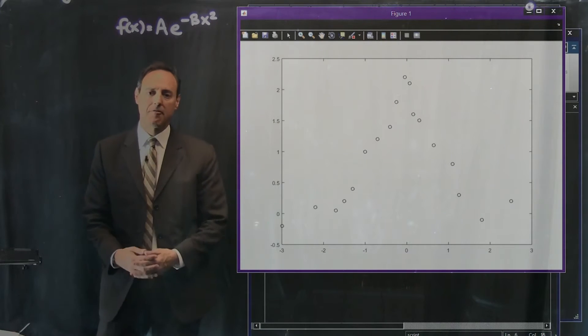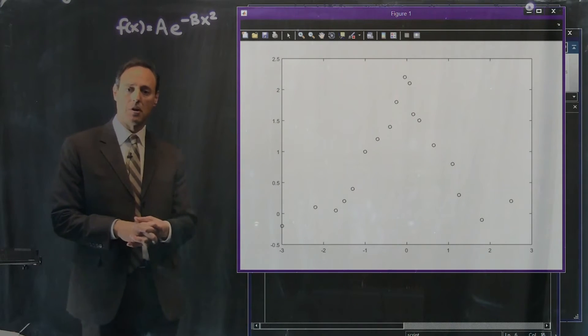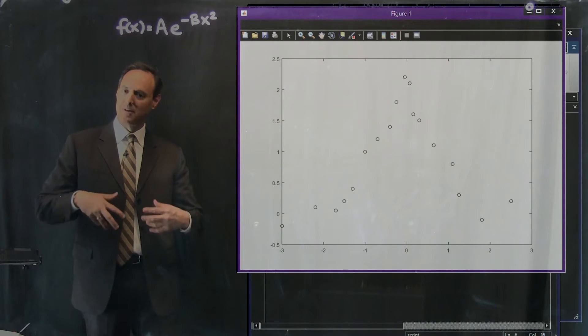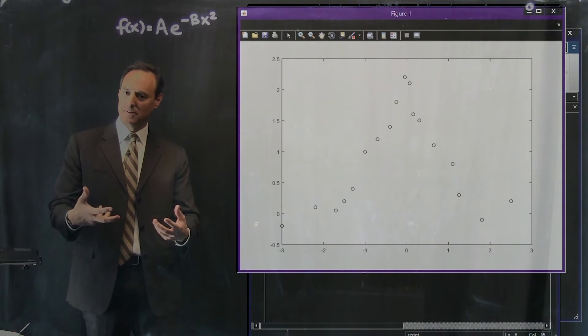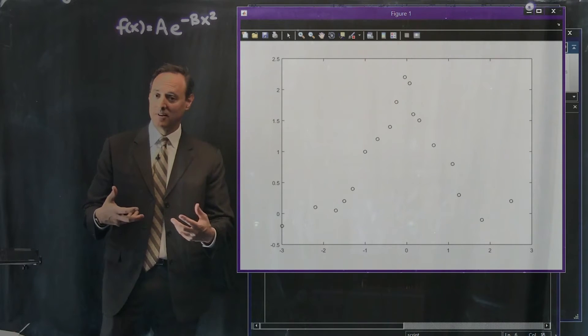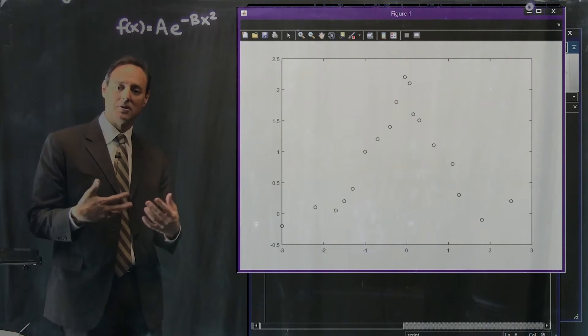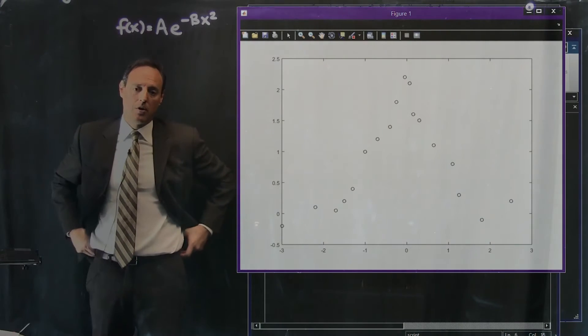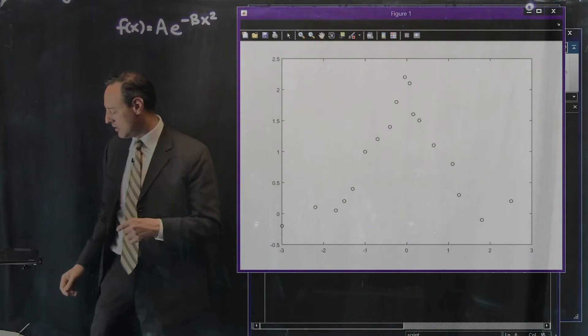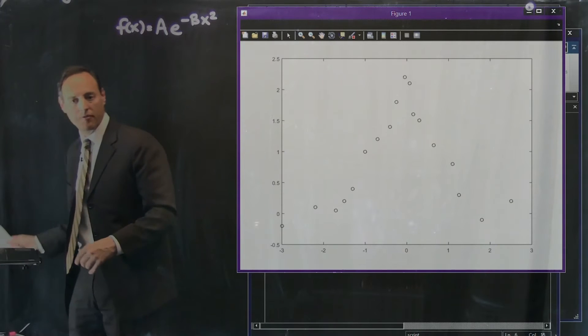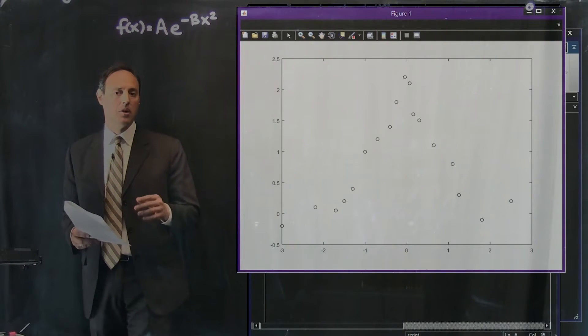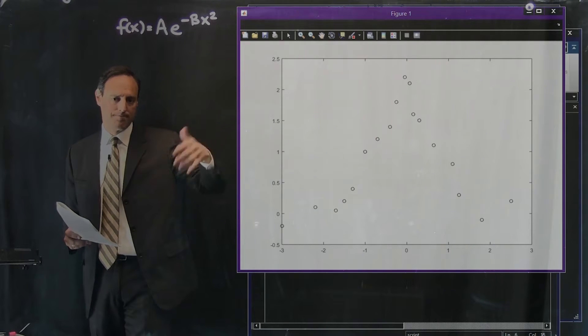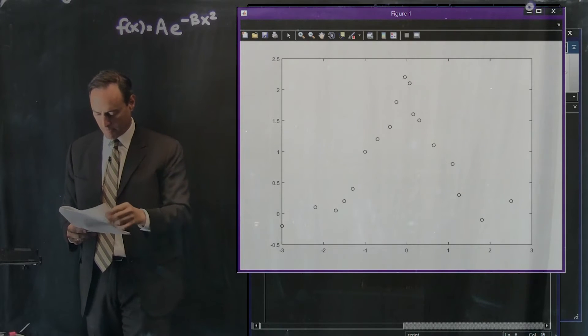So what I'm going to teach you about is the fminsearch command, which is an optimization algorithm. What it allows you to do is put in something that you want to optimize. In this case, we want to minimize the least square fit error with this function and this data. So we're going to go ahead and apply this and you're going to see that we can get a pretty good curve fit from this. This is very generic now because once you have this down, you can do much more sophisticated functional forms.